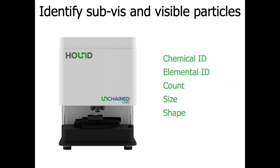To help in your root cause studies, Unchained Labs offers our Hound instrument. Hound allows you to perform chemical identification, elemental identification, as well as providing particle count, size, and shape — all on a single platform with a single sample preparation. This really helps if you have limited sample for that root cause study and limited time. Hound makes this a straightforward process where you can walk away with the data you need to track that particle back to its source.